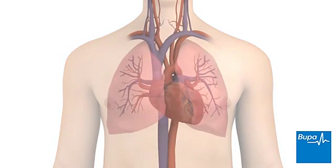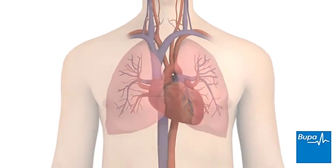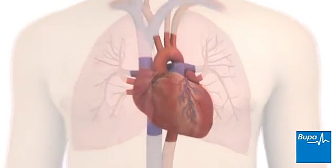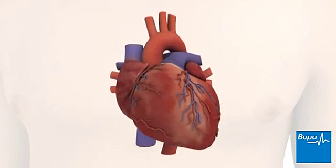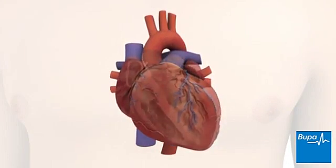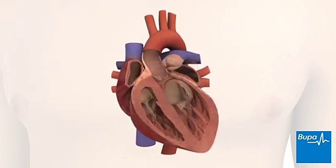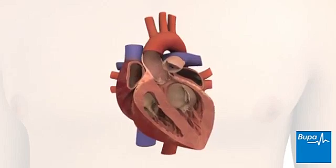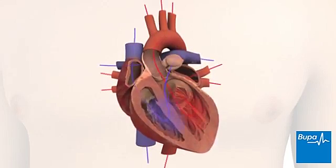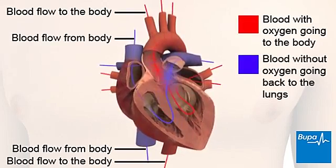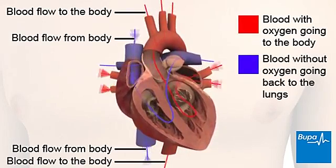Your heart is a muscular organ which lies in the centre of your chest. It pumps blood containing oxygen from the lungs to the body and passes blood without oxygen back to the lungs to absorb more oxygen.